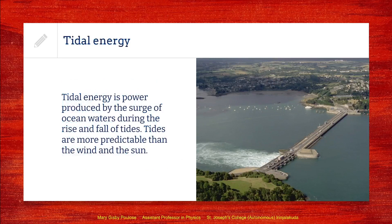The next type of energy is tidal energy. Tidal energy is produced by the rise and fall of tides. This is very popular in regions where there is prominent high tide and low tide, because tidal energy is more predictable than the sun and the wind, and hence we can better control the production of electricity.